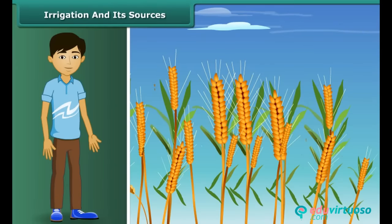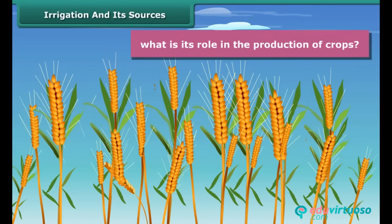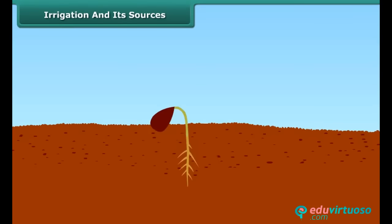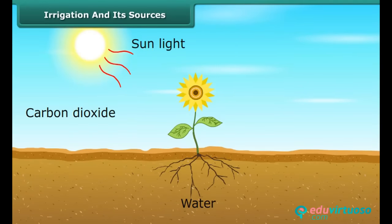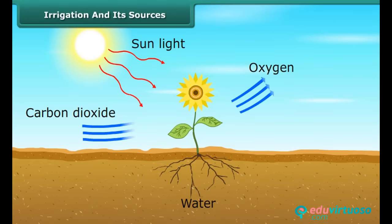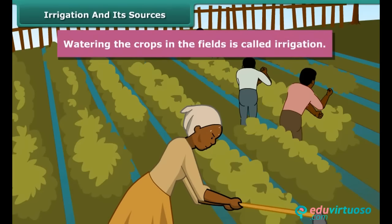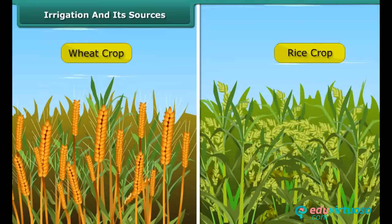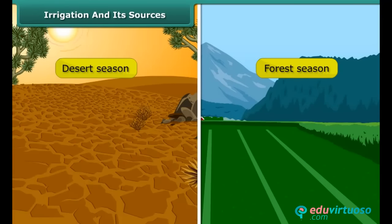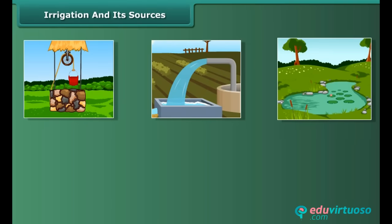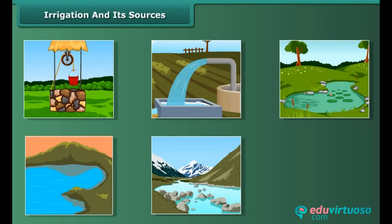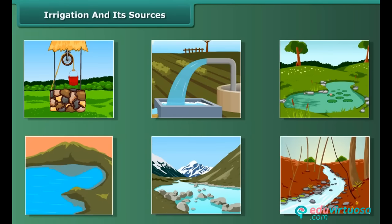Water is very essential for all living beings, but what is its role in the production of crops? Water is essential for crops because germination of seeds cannot take place under dry conditions. Water is absorbed by the plant roots, and along with it, minerals and fertilizers are also absorbed. Hence, watering the crops in the fields is called irrigation. The time and frequency of irrigation varies from soil to soil, crop to crop and season to season. The main sources of irrigation include wells, tube wells, ponds, lakes, rivers, dams and canals.